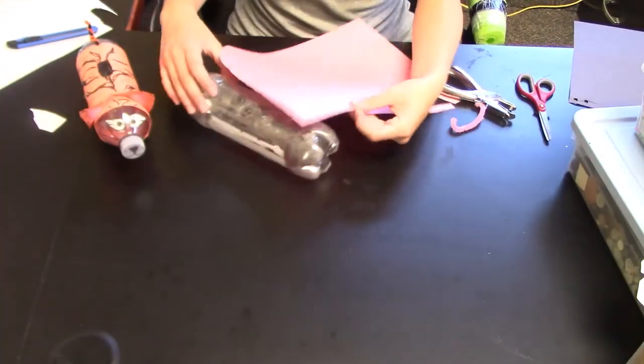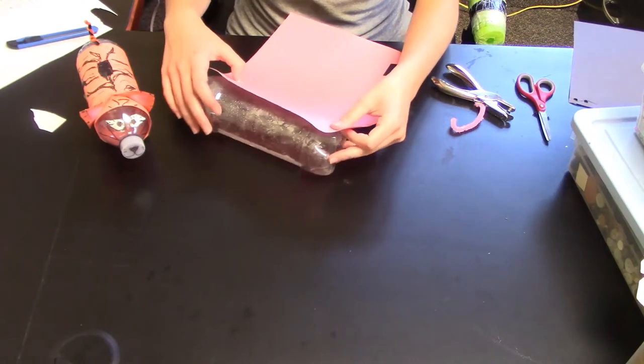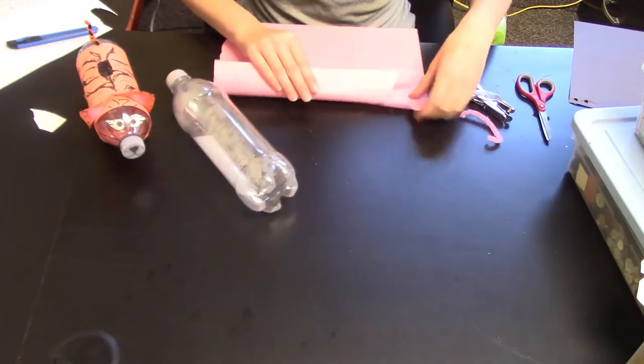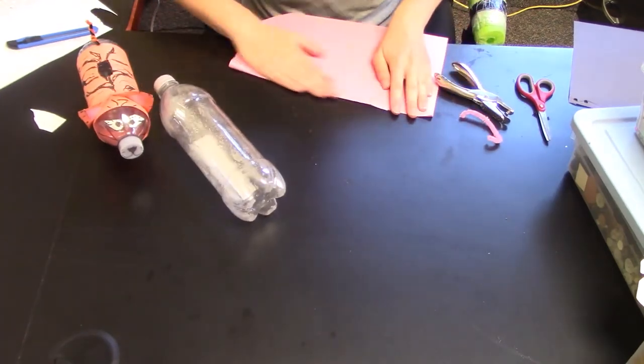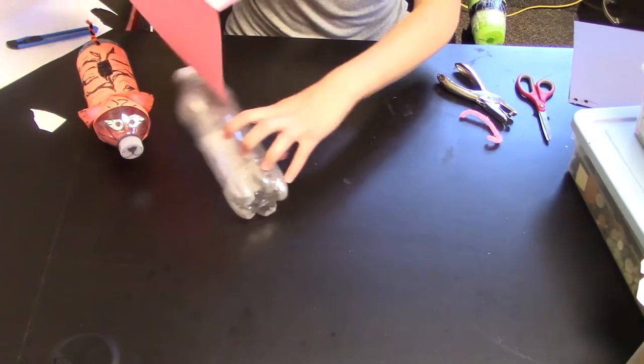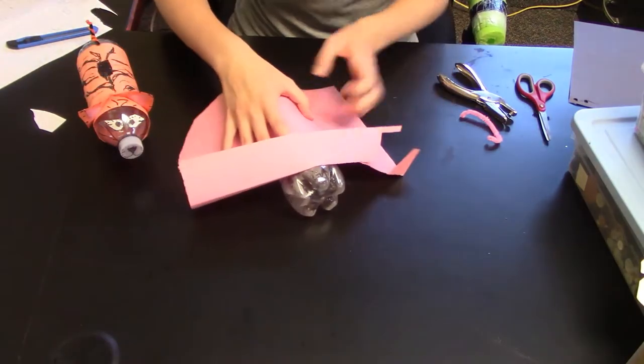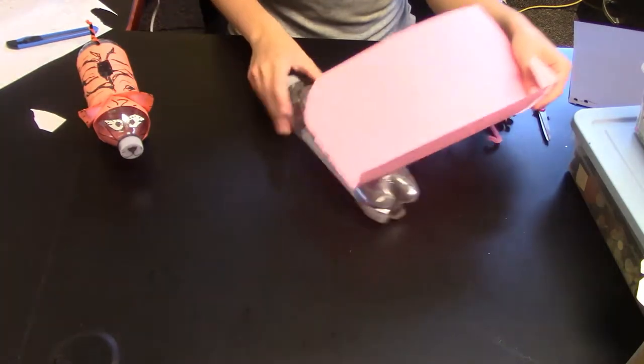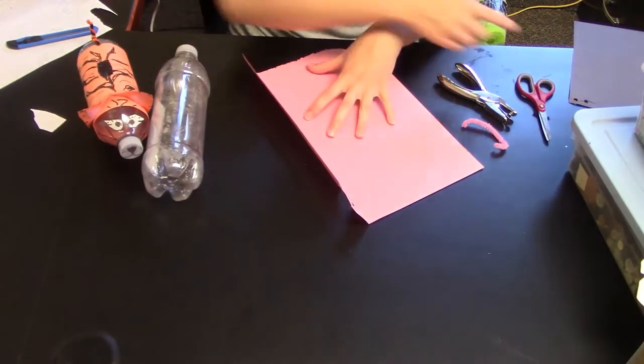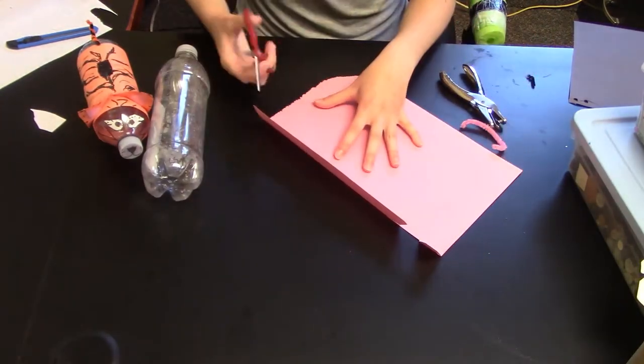We'll want it to cover most of the bottle. So we'll measure it, about that long I'm thinking, and then we'll cut it with our scissors.